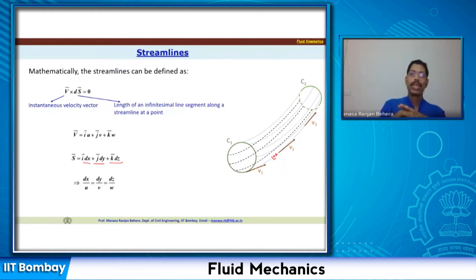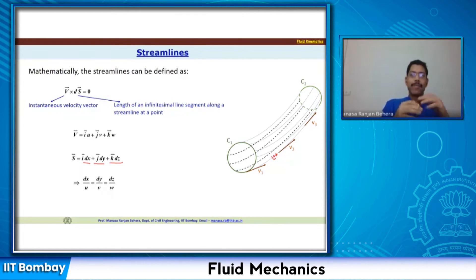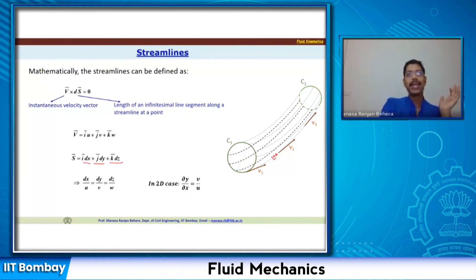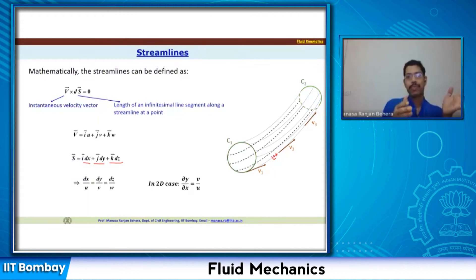This streamline equation can be solved for a 2D case — whether it is the x-y, y-z, or z-x plane. For a 2D case in the x-y plane, we can write dx/u = dy/v, or rearranging: dy/dx = v/u. So the slope of the streamline is given by dy/dx, which equals v/u.